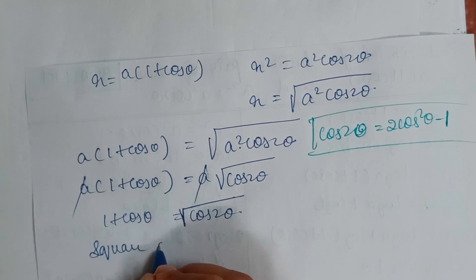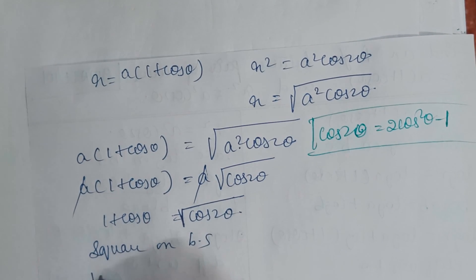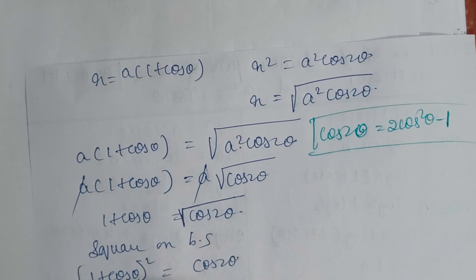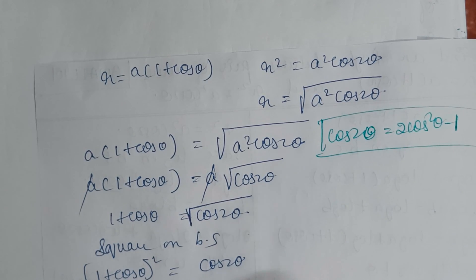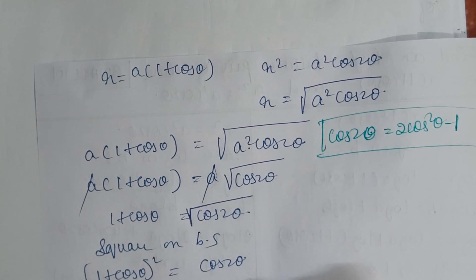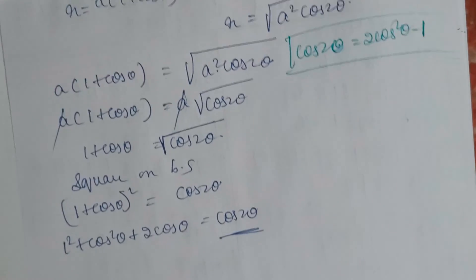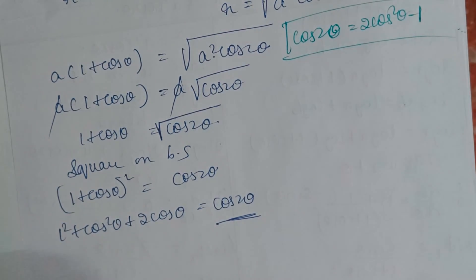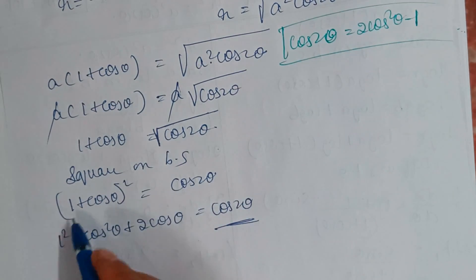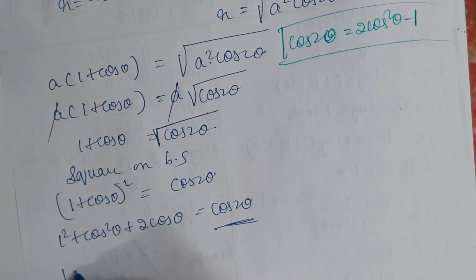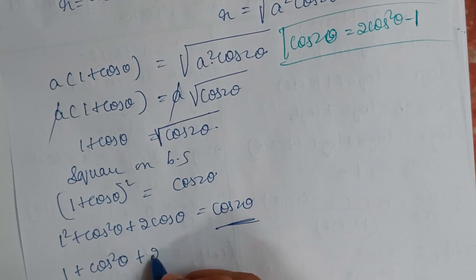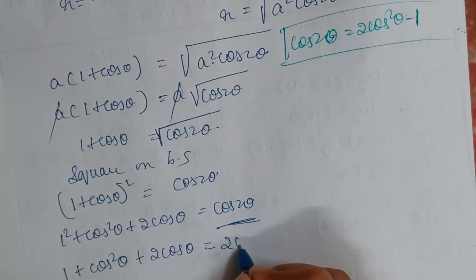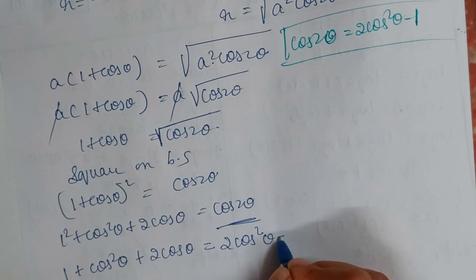Squaring both sides: (1 + cos θ)² = cos 2θ. Expanding the left side: 1 + cos²θ + 2 cos θ = cos 2θ. We know cos 2θ = 2cos²θ − 1, so substituting: 1 + cos²θ + 2 cos θ = 2 cos²θ − 1.